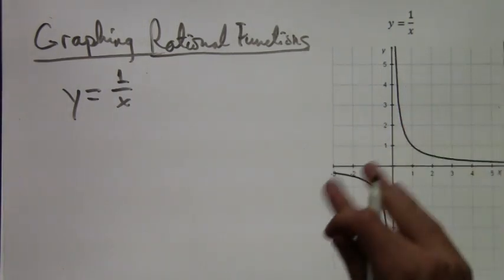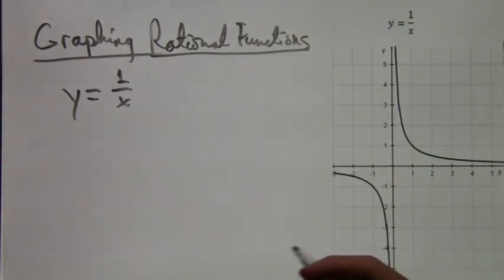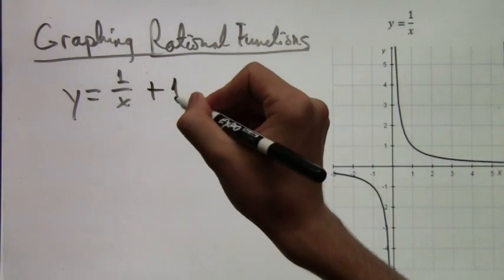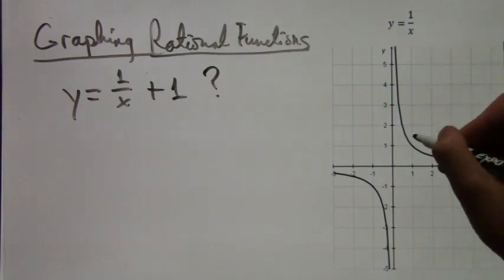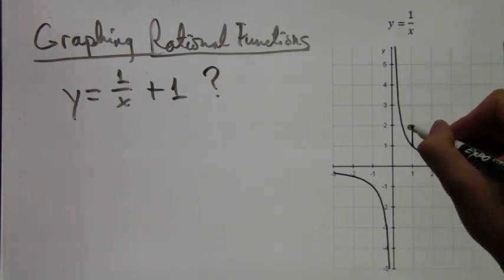And also when x is really small, you're dividing by smaller and smaller numbers, so it's increasing. And that's why when x goes close to 0, it has this weird spike. It's called an asymptote.